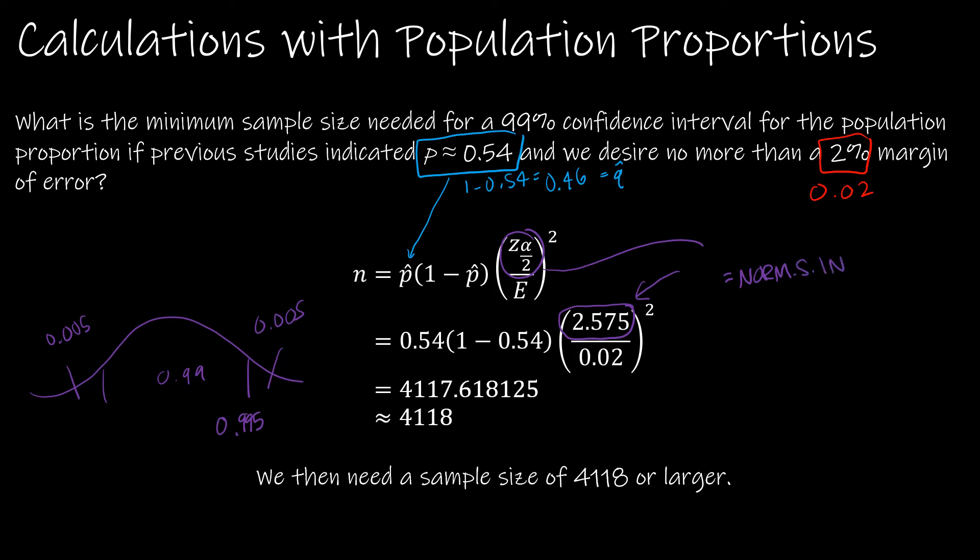Notice I went straight from this whole thing to the answer, and that was on purpose because students often try to find each value and round it down and use that rounded value to find a rounded solution. Don't round till you get to the end of the question, and then always round up when we're looking for a sample size. So approximately 4118 needs to be our sample size.